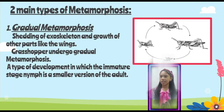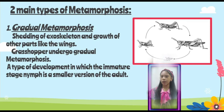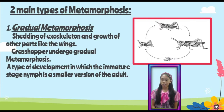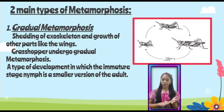Gradual metamorphosis is the shedding of the exoskeleton and growth of other parts like the wings. Grasshoppers undergo gradual metamorphosis, a type of development in which the immature stage, called a nymph, is a smaller version of the adult. Gradual metamorphosis has only three stages in its life cycle: egg, nymph, and adult.